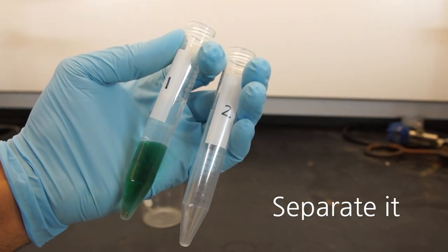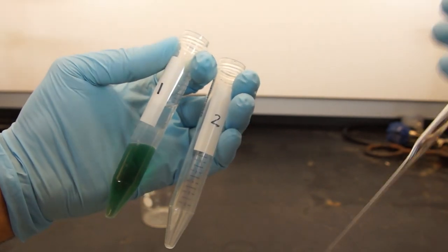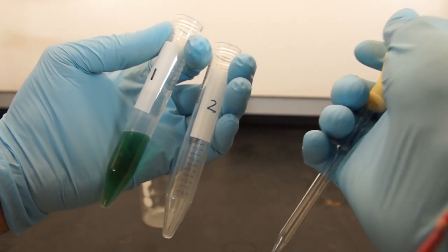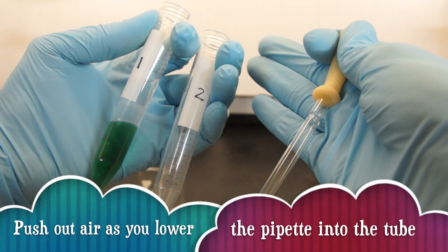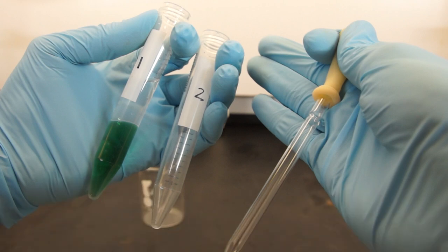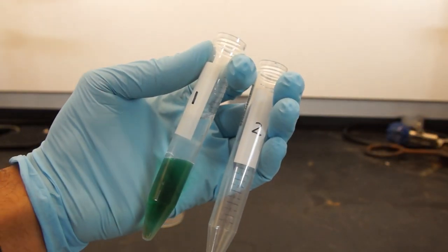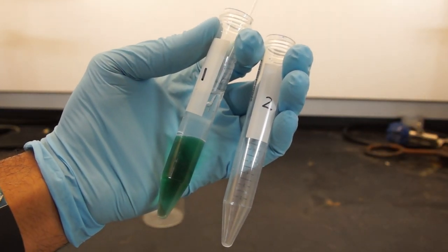To separate layers, grab another falcon tube and a pasteur pipette. Make sure that you push air out as you lower the pasteur pipette into the falcon tube. Lower the pasteur pipette all the way to the bottom of the falcon tube.